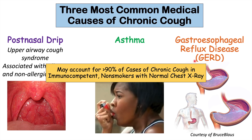Overall, these three conditions — post-nasal drip, asthma, and gastroesophageal reflux disease — may account for at least 90% of cases of chronic cough in patients who are otherwise immunocompetent, non-smokers, and have a normal chest X-ray. So if the patient is healthy, a non-smoker, and has nothing noted on chest X-ray, these three conditions are going to be the main causes of chronic cough.